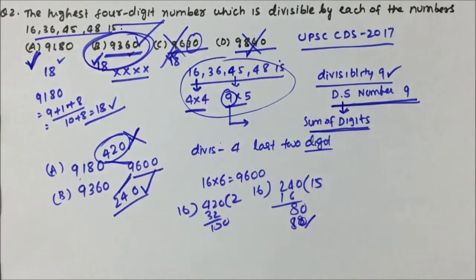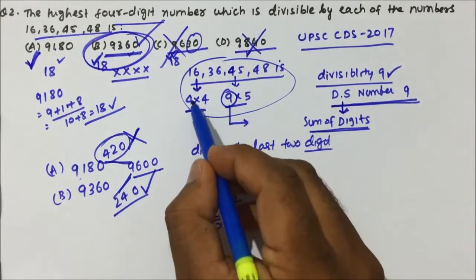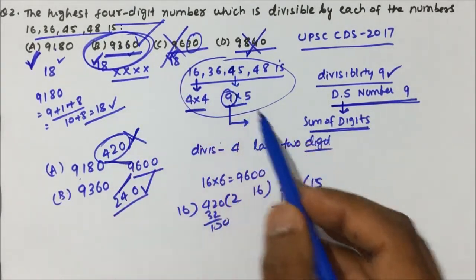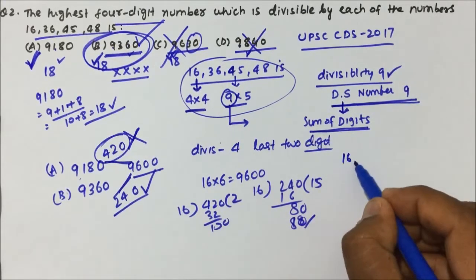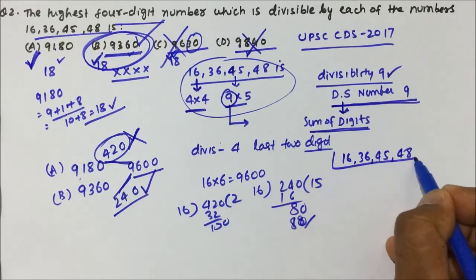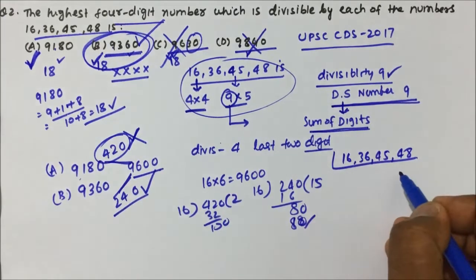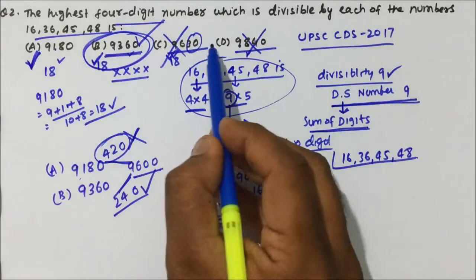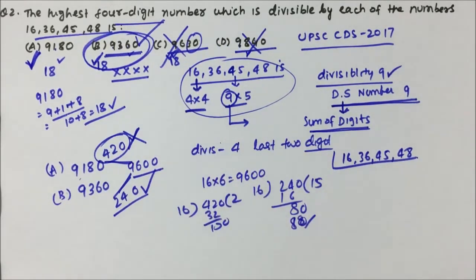So the answer is option B. What I did was just apply the divisibility rules of 9, 4, and 16, and using those I was able to solve the question. Otherwise, you would have to take the LCM of the numbers and then check which option is divisible by that LCM. I hope you understood the question and the trick. Thanks a lot for watching the video.